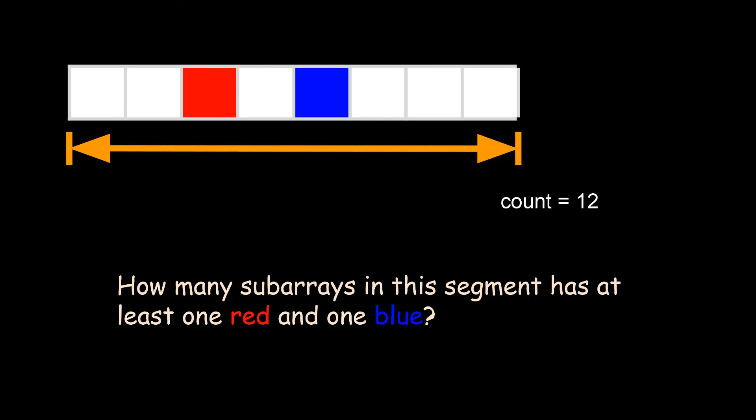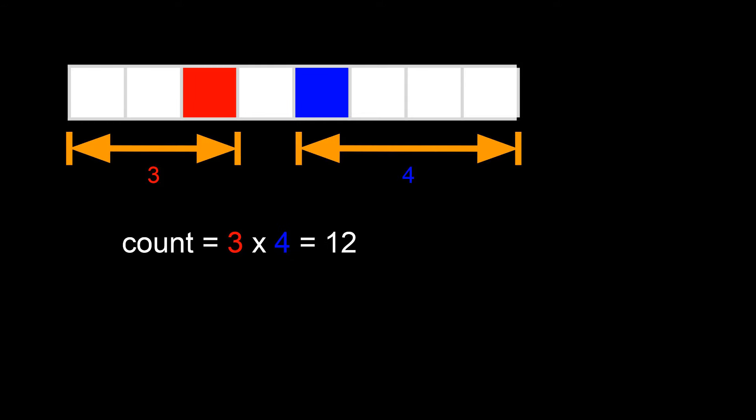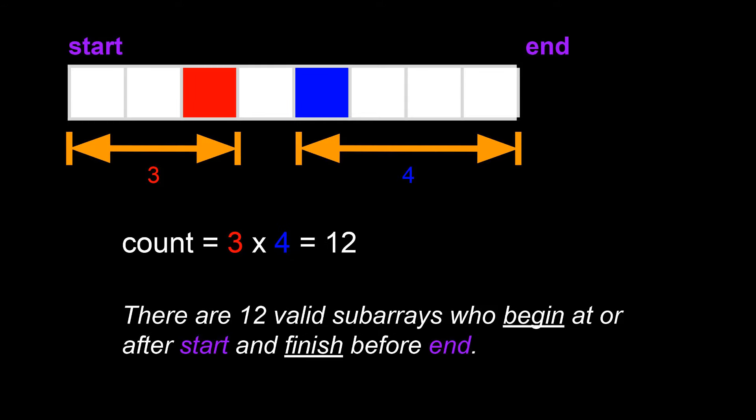Since a valid subarray can start at any of the three squares on the left of the red and end in any of the four squares on the right of the blue square, the total number of possible subarrays is 3 times 4 equals to 12. Specifically, the number of subarrays in this segment is red minus start plus 1 times end minus blue. This formula is really important, so make sure you keep it in your back pocket. We'll then come back to it later. This also works when the blue square appears before the red square. We simply swap the values of red and blue.